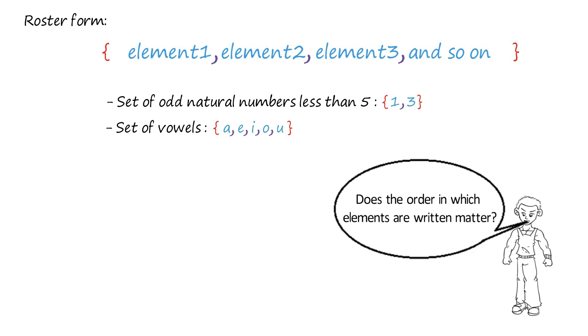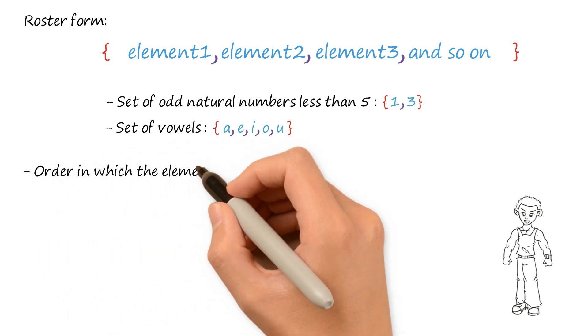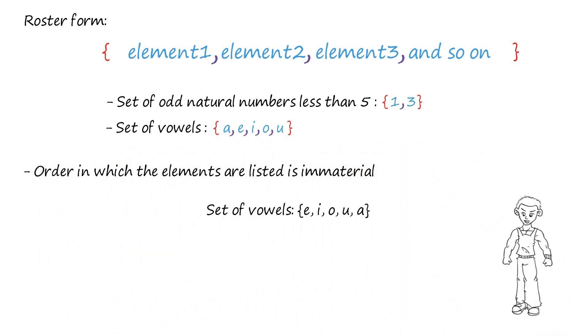Does the order in which elements are written matter? In roster form, the order in which elements are listed is immaterial. For example, the set of vowels can also be represented in this way.